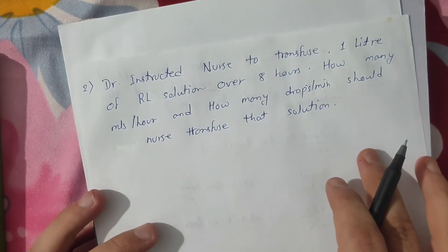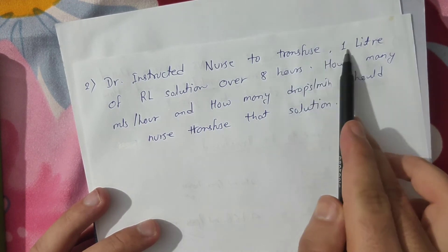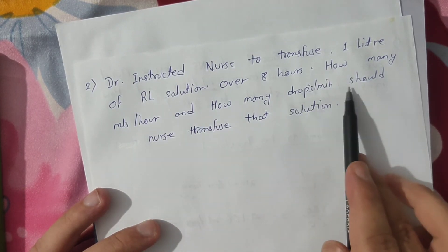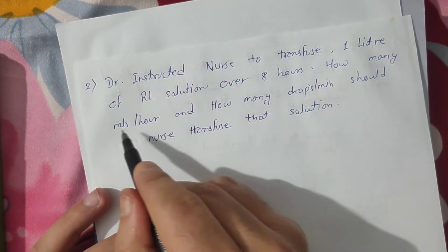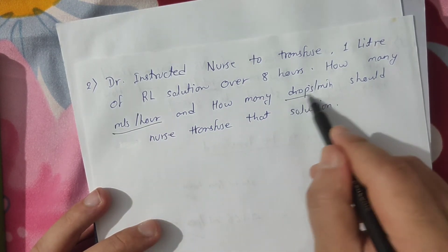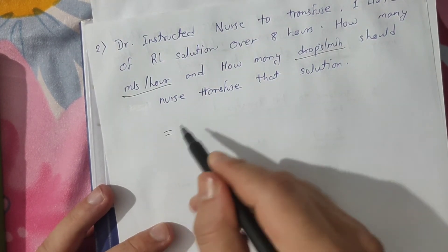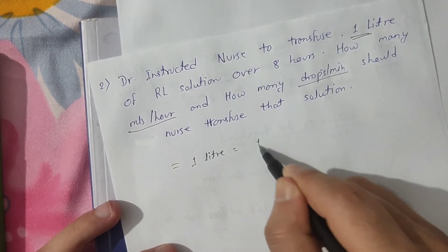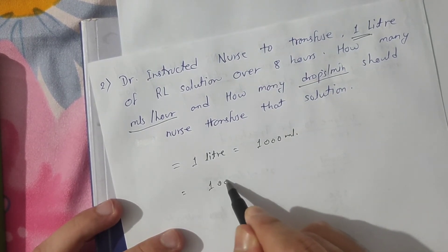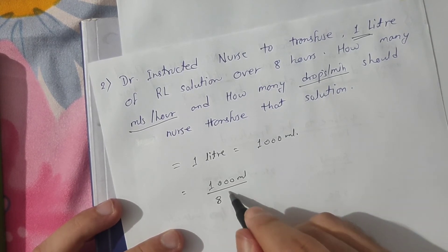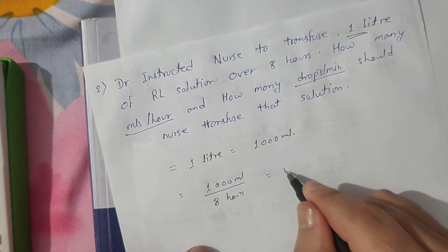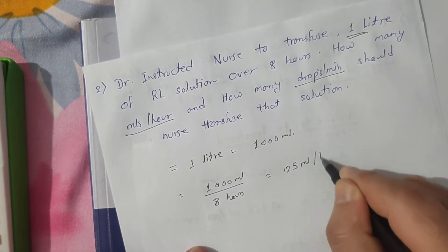The second question: a doctor instructed a nurse to transfuse 1 liter of Ringer's lactate solution over 8 hours. How many milliliters per hour and how many drops per minute should the nurse transfuse? The volume is 1 liter, which equals 1000 ml. Dividing 1000 ml by 8 hours gives 125 milliliters per hour — that is the answer to the first part.